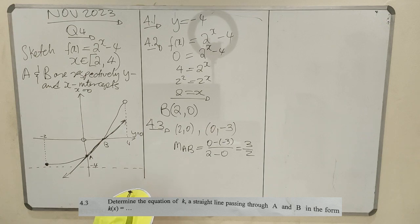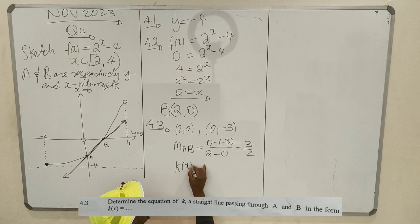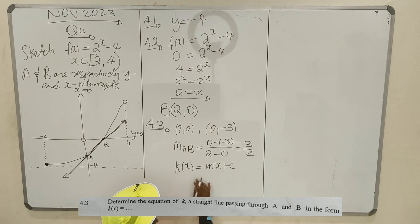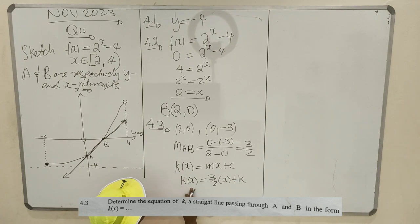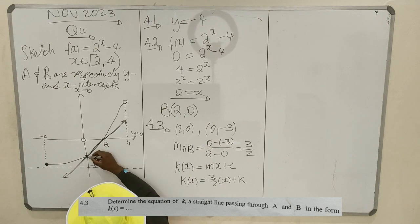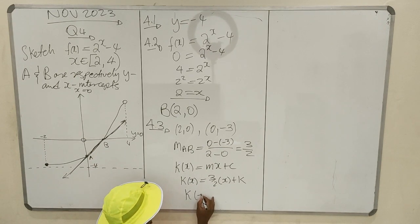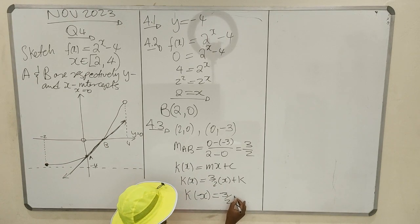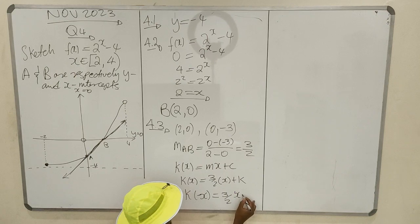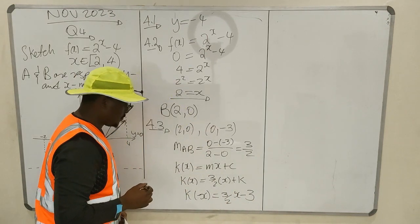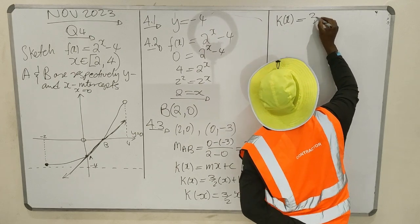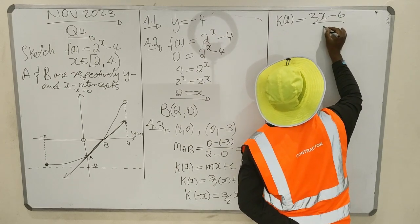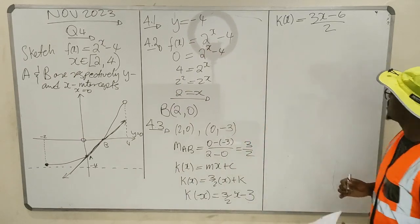The gradient is 3 over 2. So you need the line k(x) equals mx plus c, which is k(x) equals 3 over 2 times x plus c. The y-intercept c is minus 3. So the equation is k(x) equals 3 over 2 times x minus 3, which simplifies to k(x) equals (3x minus 6) over 2.